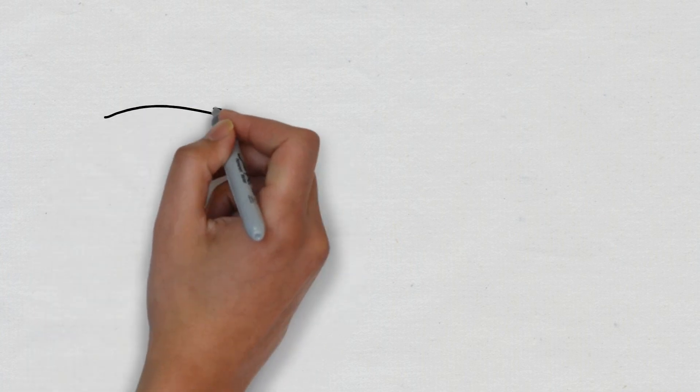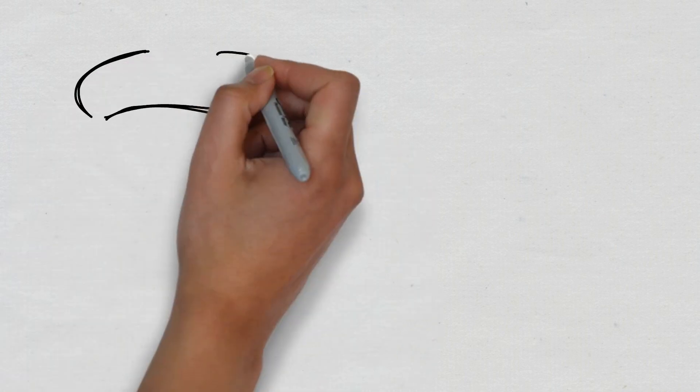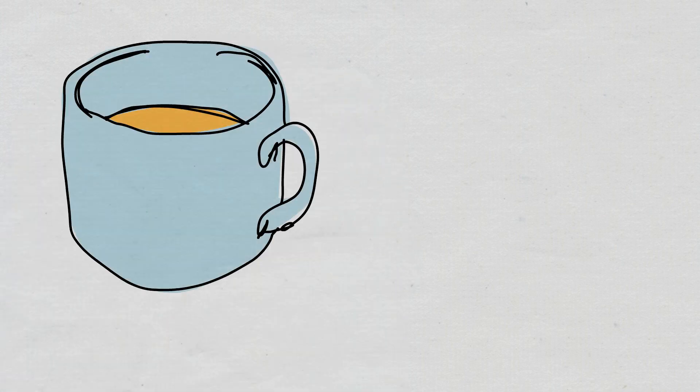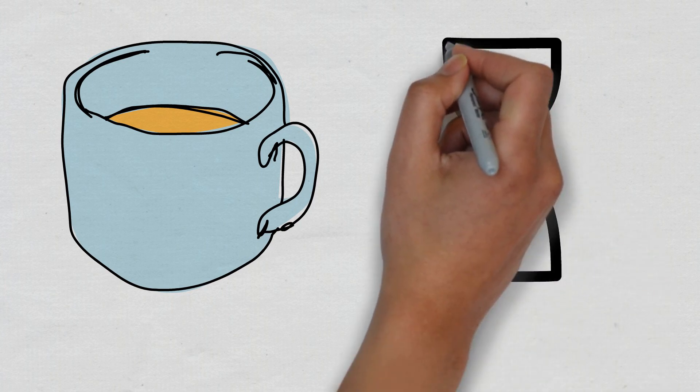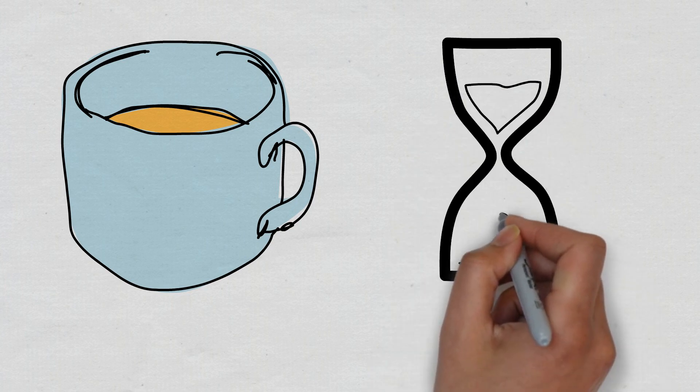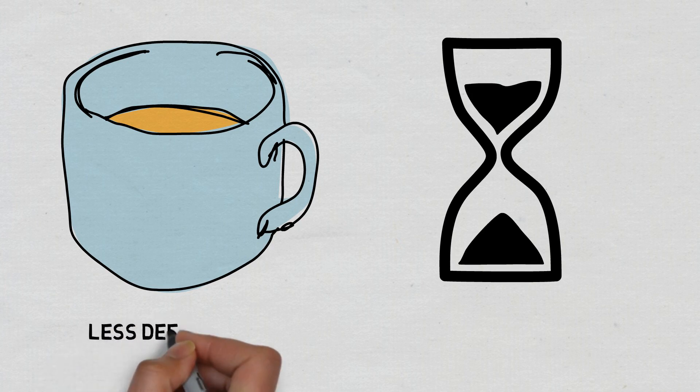Now here are some things to avoid that may affect your sleep cycle. First, there is caffeine. Now consuming caffeine in the evening will disrupt your sleep. How? Well, caffeine can delay the timing of your body clock. This will make it harder for you to fall asleep and so reduce your total sleep hours. Also, caffeine will reduce the amount of deep sleep you get.